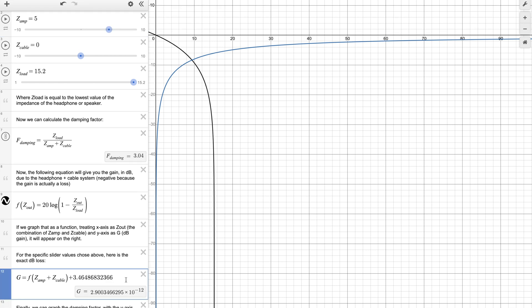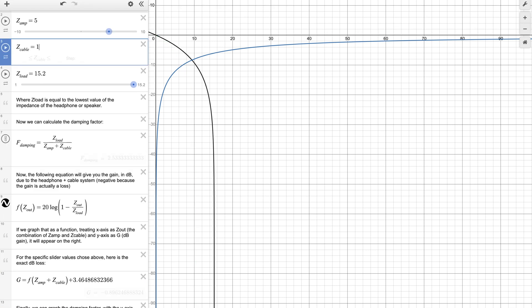When we subtract the drop in SPL from the amplifier itself and have a cable resistance of 1 ohm, the drop in SPL from the cable itself is 0.89 dB, meaning that the higher the output impedance of the amplifier itself, the greater the effect a cable has on SPL drop.